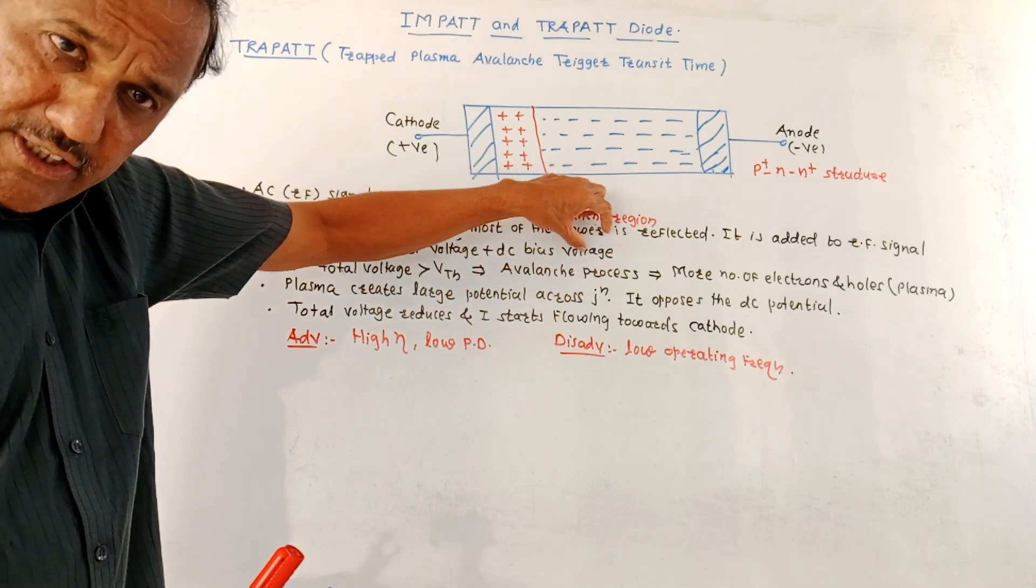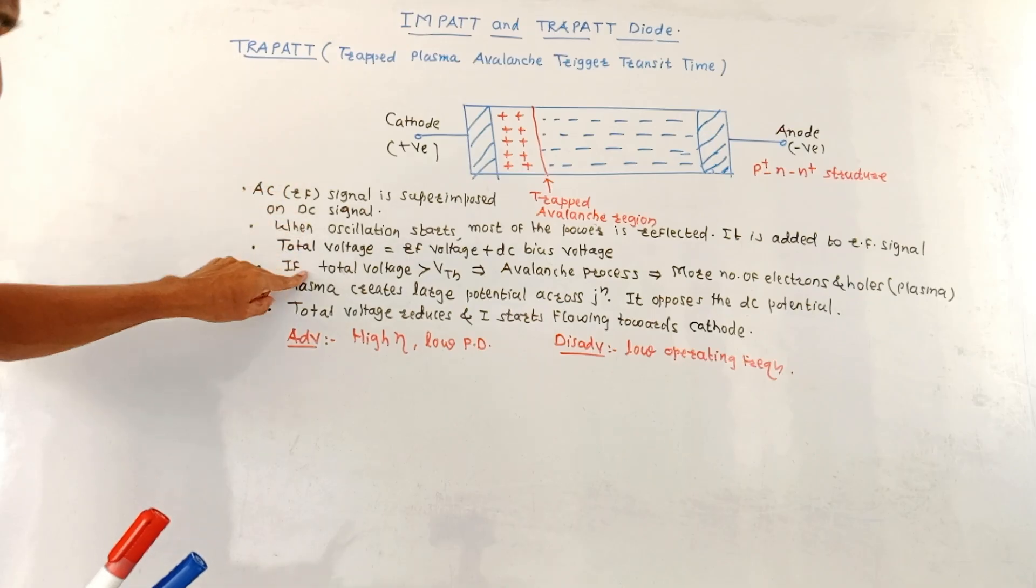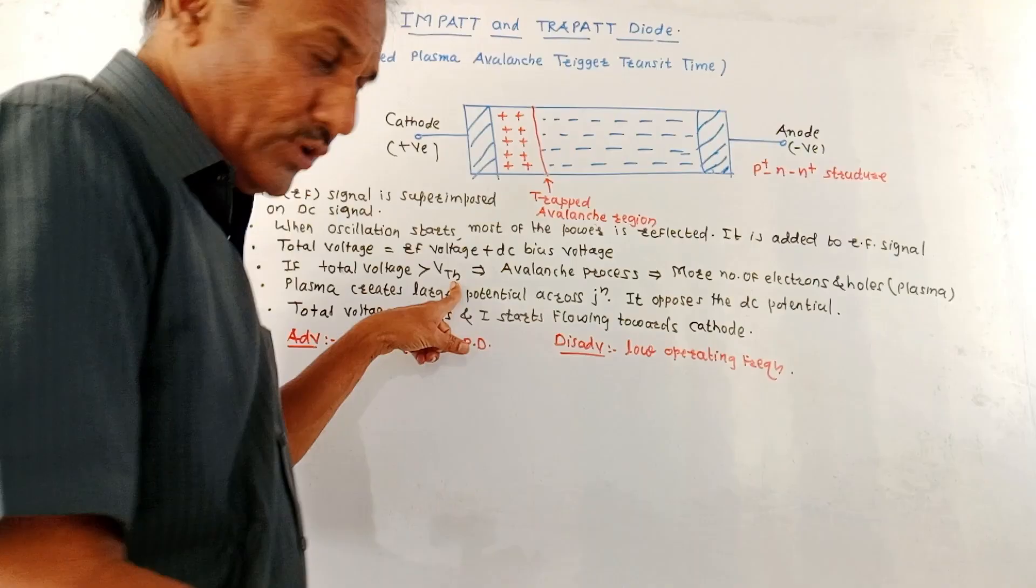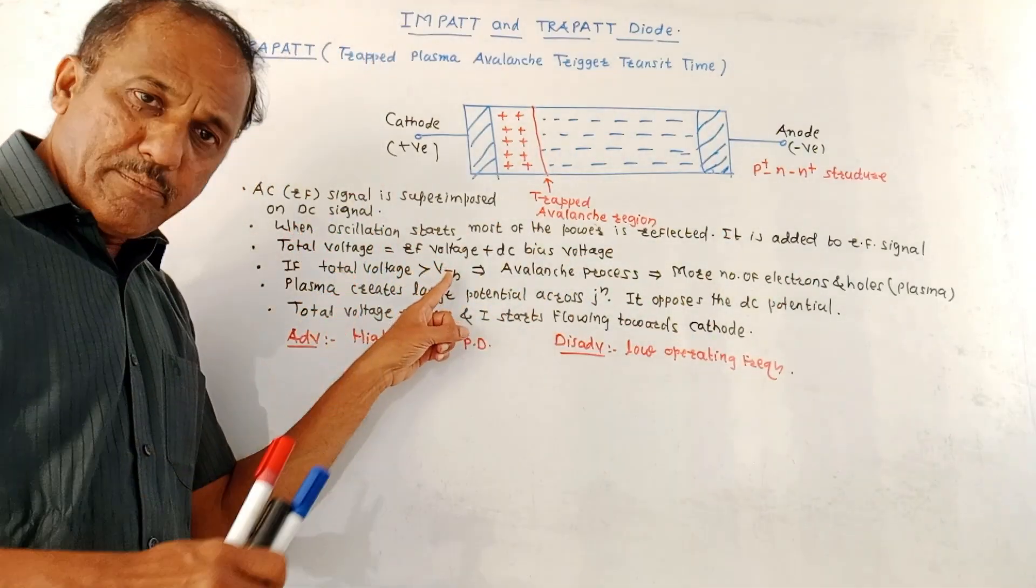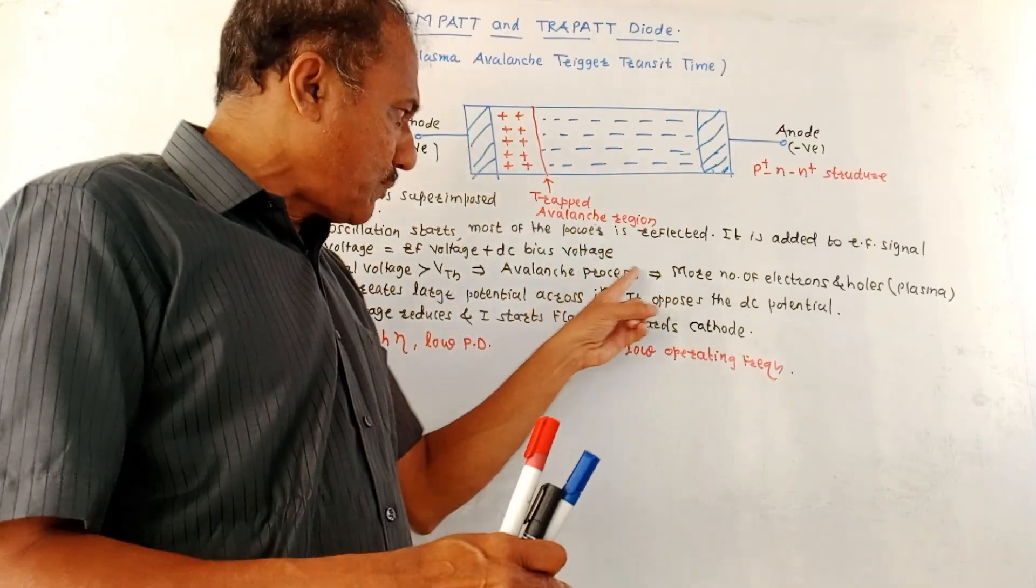Now the total voltage is addition of RF voltage and DC bias voltage. So due to this reflected power, the total voltage gets increased. Whenever this total voltage becomes greater than VTH, VTH is the threshold voltage. So whenever total voltage becomes greater than the threshold voltage, the avalanche process starts.